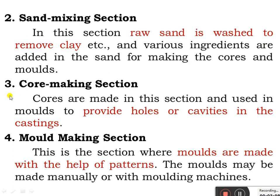The third section is the core making section. Cores are made in this section and are used in molds to provide holes or cavities in the casting. The fourth section is mold making, where molds are made with the help of patterns. The molds may be made manually or with a molding machine.